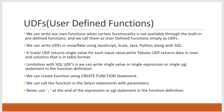A scalar UDF returns a single value for a single input value. That means when we execute the function for one input value, we get only one output value. Those are called scalar UDFs. But a tabular UDF returns data in the form of rows and columns, that is in table format. Snowflake gives us the flexibility to return a tabular result as well, which is in the form of rows and columns.